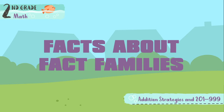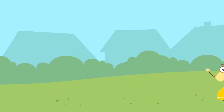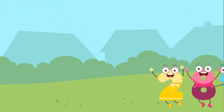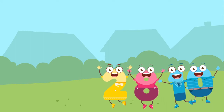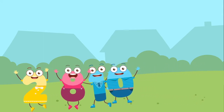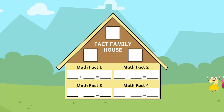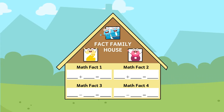Facts About Fact Families. A fact family has three numbers. The three numbers are related and are always found together. There are at least four math facts to be made with a fact family.